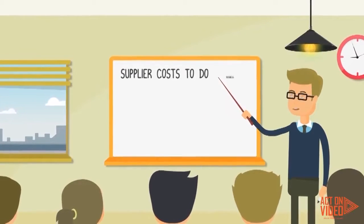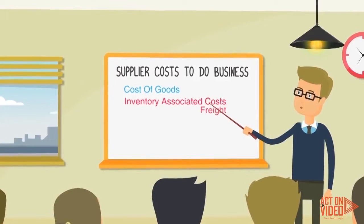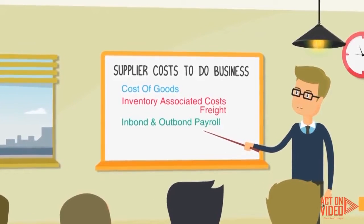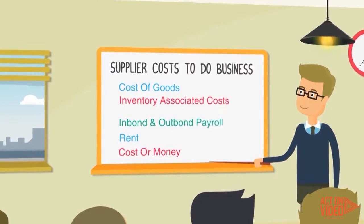Such supplier costs to do business: cost of goods, inventory-associated costs, freight, payroll both administrative and sales staff, rent, in other words warehousing, factoring of receivables.